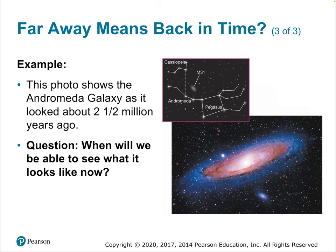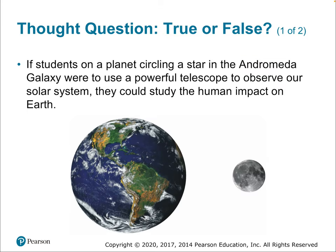This photo shows the Andromeda galaxy as it looked two and a half million years ago. We won't be able to see what it looks like 'now' for another two and a half million years. If students on a planet in the Andromeda galaxy used a powerful telescope to observe Earth and study human impact — that would be false, because they would be seeing Earth two and a half million years ago, before humans evolved.